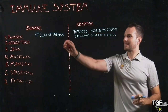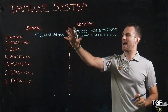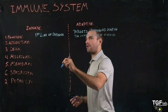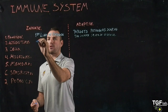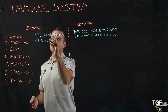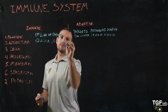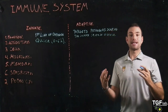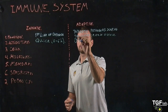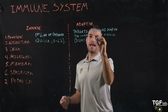Because the innate is the first line of defense and the adaptive targets pathogens that escape the innate, the action time is different. For the innate, the action time is very quick — we are talking about zero to six hours. But for the adaptive immune system, the time is delayed — we are talking from days to weeks.